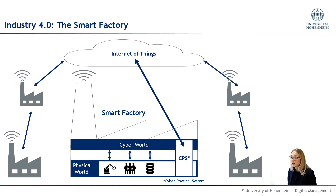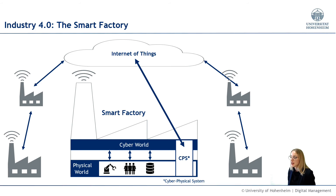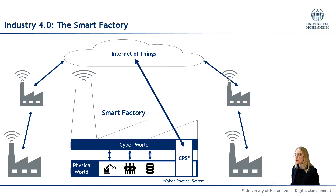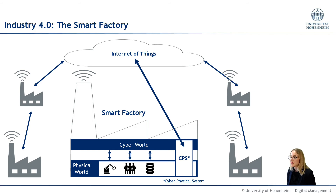Sensors and actuators work together to create more efficient and value-added processes by transparently providing information at the right time in the process. This is happening through the increasing networking of the physical and digital worlds. The result is more flexible, efficient, and high-quality production of products and services.